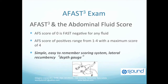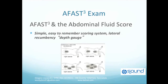It is very simply done by assigning 0 for negative in any of the four AFAST views. And then for any positive view, a score of 1 is assessed with a maximum score of 4. This is a simple, easy-to-remember scoring system. And lateral recumbency in dogs serves as a depth gauge, as we'll see in the next slide. It's a 0 to 4 score.